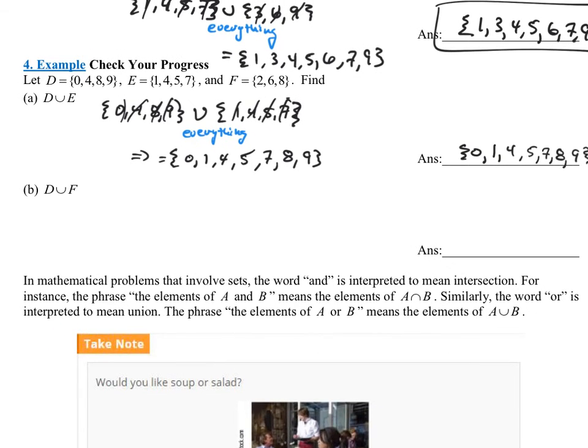Let's look at the next problem. D union F. So write out D, which was 0, 4, 8, and 9. Union F, which was 2, 6, and 8. Again, union means everything. Please write the sets. Please write the word everything or all. And this is going to equal anything we see. I see the numbers 0, 2, 4, 6, 8, and 9.